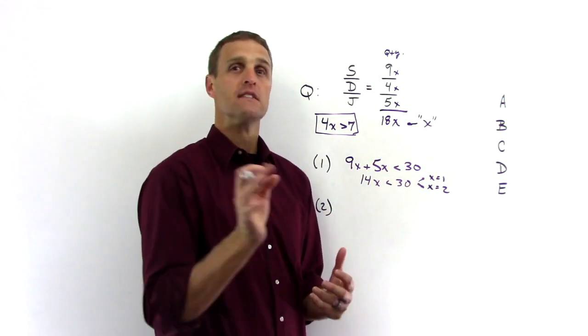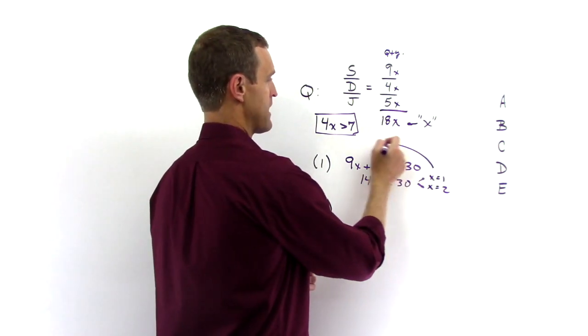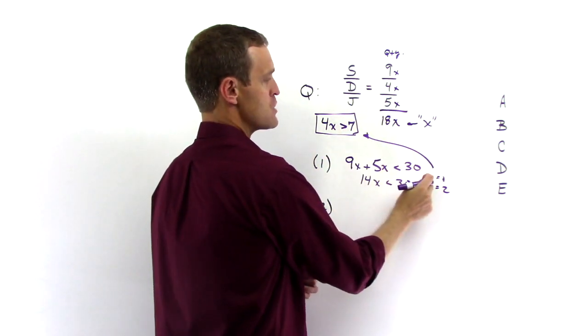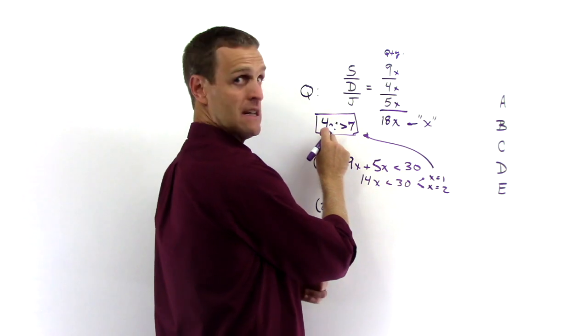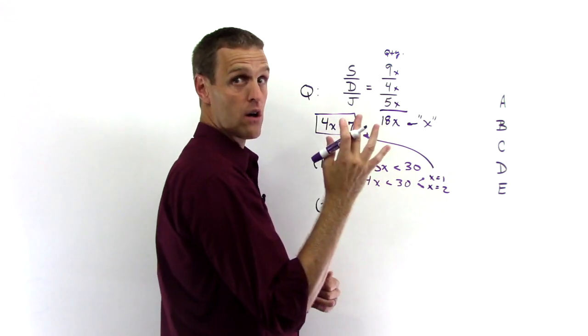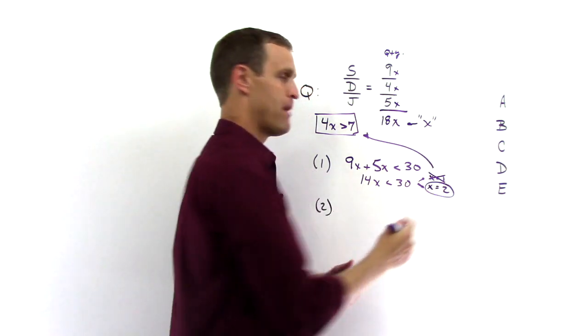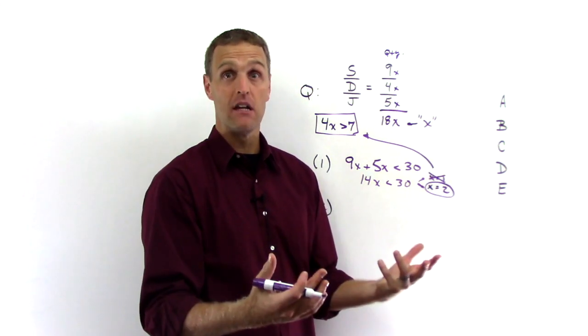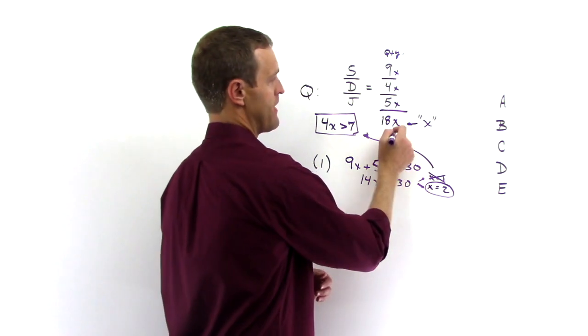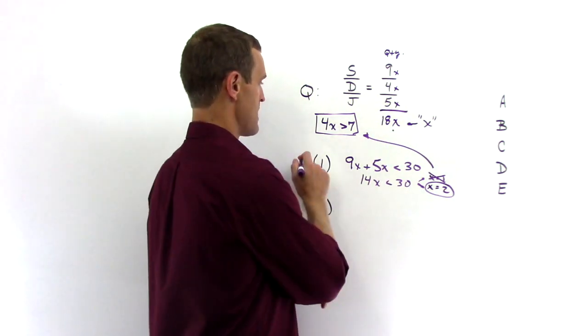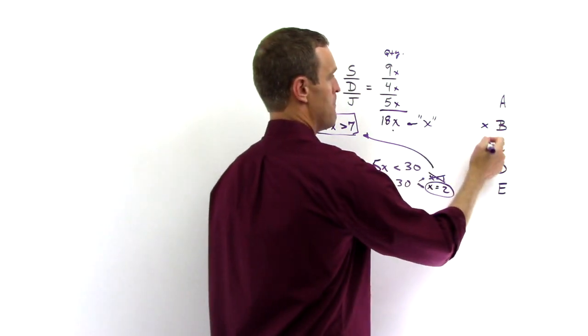So we don't really know. But we did have this extra information that says dresses has to be more than 7. So if the multiplier is only 1, dresses is only going to be 4. That's not more than 7. So X can't equal 1. So there's only one possible multiplier there could be. X equals 2, and therefore we can solve for the total. 18X, 18 times 2. So statement number one is sufficient by itself.